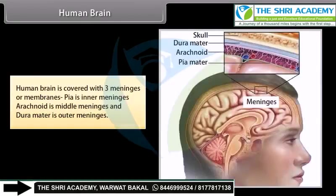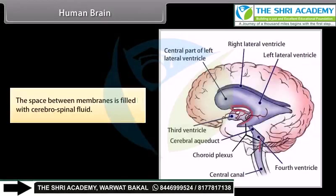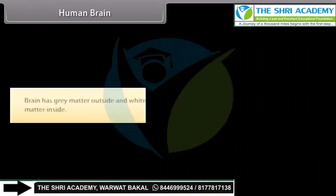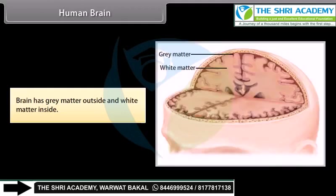The human brain is covered with three meninges or membranes: the pia mater is the inner meninges, the arachnoid is the middle meninges, and the dura mater is the outer meninges. The space between the membranes is filled with cerebrospinal fluid. The brain has grey matter outside and white matter inside.